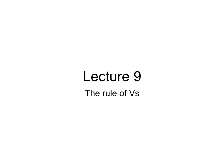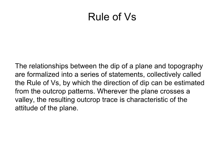Lecture 9: The Rule of Vs. The relationships between the dip of a plane and topography are formalized into a series of rules, collectively called the Rule of Vs, by which the direction of dip can be estimated from outcrop patterns. Wherever the plane crosses a valley, the resulting outcrop trace is characteristic of the orientation of the plane.